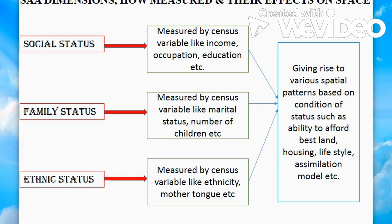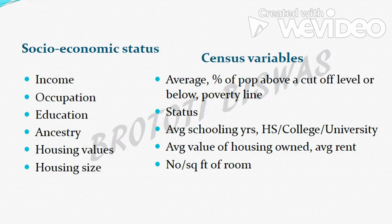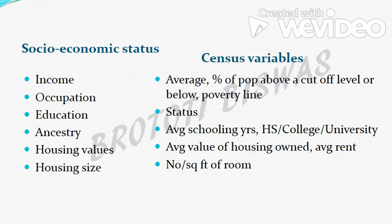When you plug in all three variables, they give rise to a spatial pattern. The city was considered as an organism which changes through space and time. This gives rise to spatial patterns resulting in best ability to afford the best land, housing, lifestyle, and assimilation models. Based upon socioeconomic, family, and ethnic status variables, the various status indicators and census variables for income — such as average income and percentage of population above a cut-off level — and housing size and value were used.